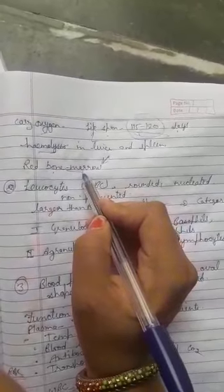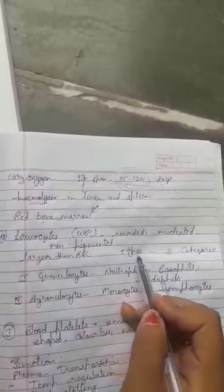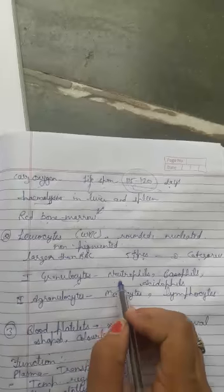Next is leukocytes, that is WBC. The leukocytes are rounded, nucleated, non-pigmented, larger than RBC size. Five types in two categories: first is granulocytes - neutrophils, basophils, acidophils. Next is agranulocytes - two types: monocytes and lymphocytes.